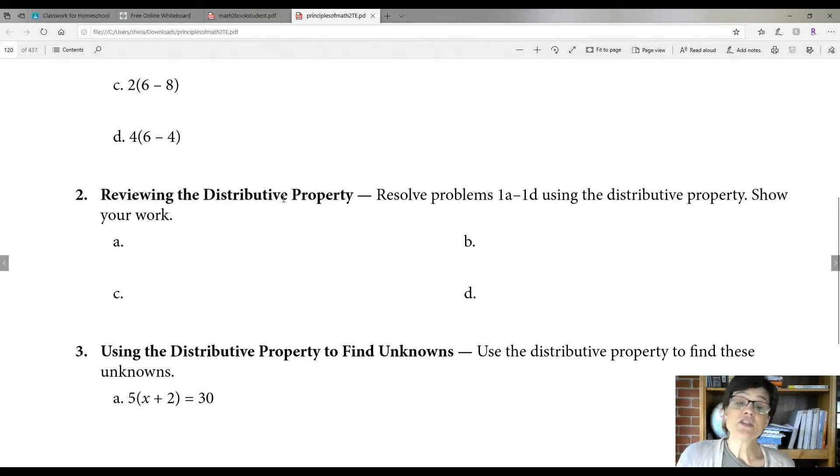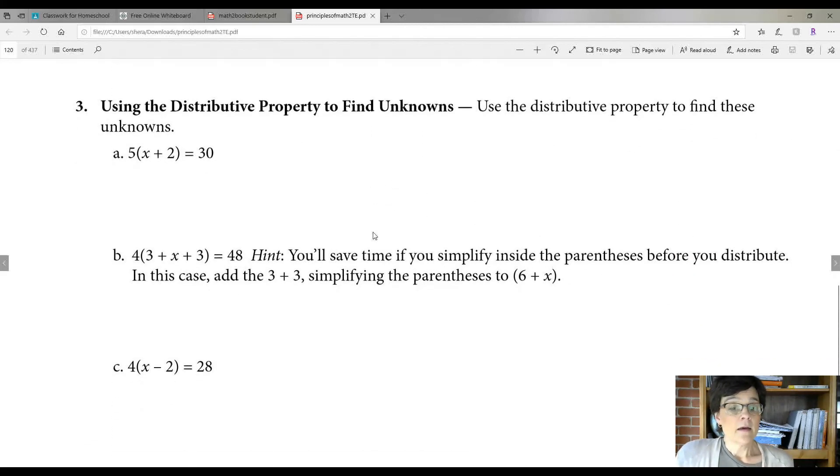Now, number two, you're going to review the distributive property. So you're going to take these problems up here, 1A through 1D, and you're going to use the distributive property. And it says to show your work on there. So I don't necessarily have to see it. If you get the right answer, generally it's because you did the problem right. The reason that it wants you to show your work is so that if you get it wrong, I can see where you got it wrong. But it doesn't matter to me whether you show the work or not. It'd be great if you'd send a piece of paper. If you use a piece of paper, you might use a whiteboard and that's okay too.